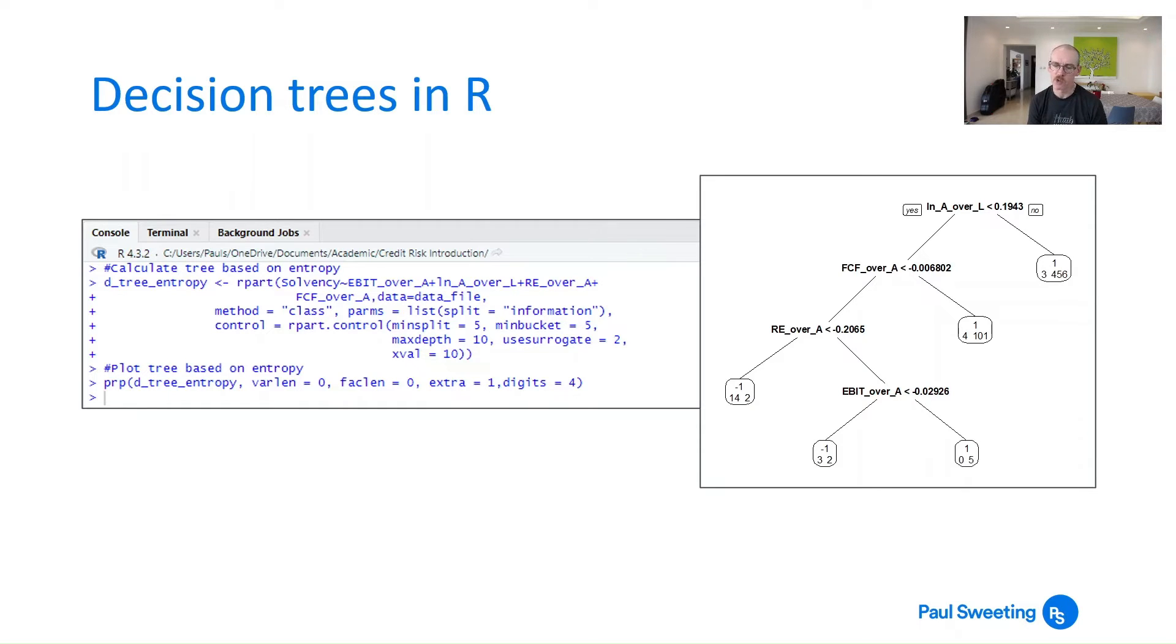But what you've got here is a decision tree where on the left is your yes answer and on your right is the no answer. And for each of those it shows you the factor or the value that you're arriving at. So for the first one it's one so it's solvency and you've got 43 insolvent firms and 456 solvent firms so that's pretty good. If you go right over to the left you end up with a minus one so insolvent and you've got 14 insolvent firms and two solvent firms. So this basically shows you how well it is doing at the different levels of classification.